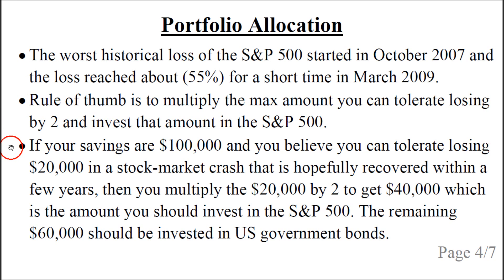So let's say your savings are $100,000 and you believe you can tolerate losing $20,000 in a stock market crash that is hopefully recovered within a few years. Then you multiply the $20,000 by two, you get $40,000, which is the amount you should invest in the S&P 500. The remaining $60,000 should be invested in US government bonds with a maturity of one year or lower.